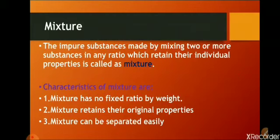There are many materials in a mixture, like a mixture of leaves, fried rice, and vegetables. There are two or more substances in a mixture, and the ratio is not fixed. The impure substances made by mixing two or more substances in any ratio which retain their individual properties is called a mixture.